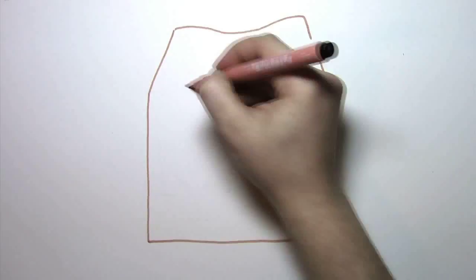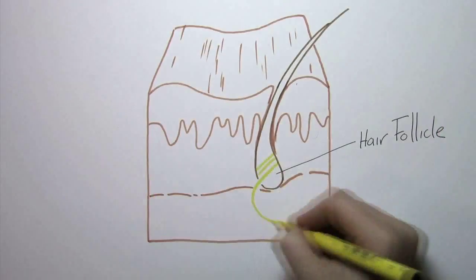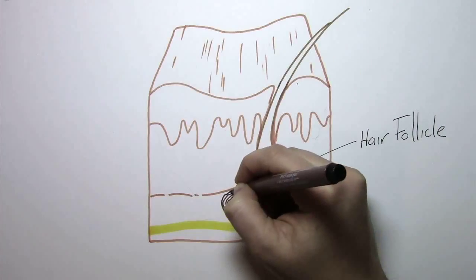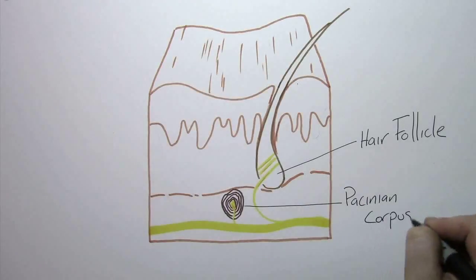And that brings us to our first sense, touch. There are four different sensory neuron endings called receptors involved in touch. Pacinian corpuscles, which respond to pressure and vibrations. Meissner's corpuscles, which are sensitive to light touch.